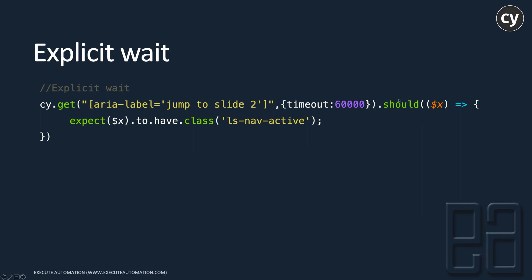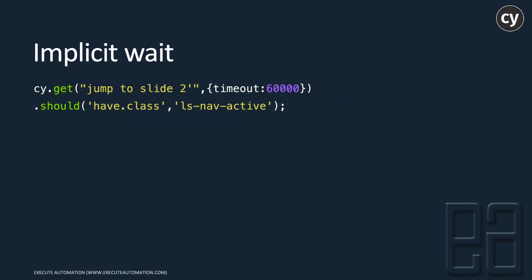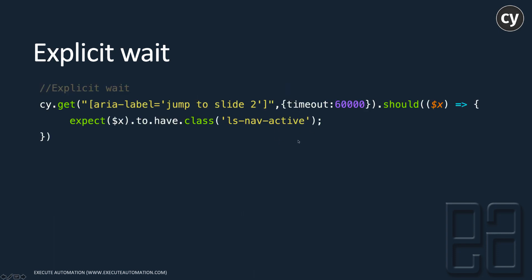For explicit wait, we use a conjunction of `should` along with `expect`. Within the `should` callback, we use `expect` to check `have.class`. This is a more elaborate way of writing the code, and it's more readable — you can perform multiple assertions inside one code block. The major difference between implicit and explicit is readability and ease of use.